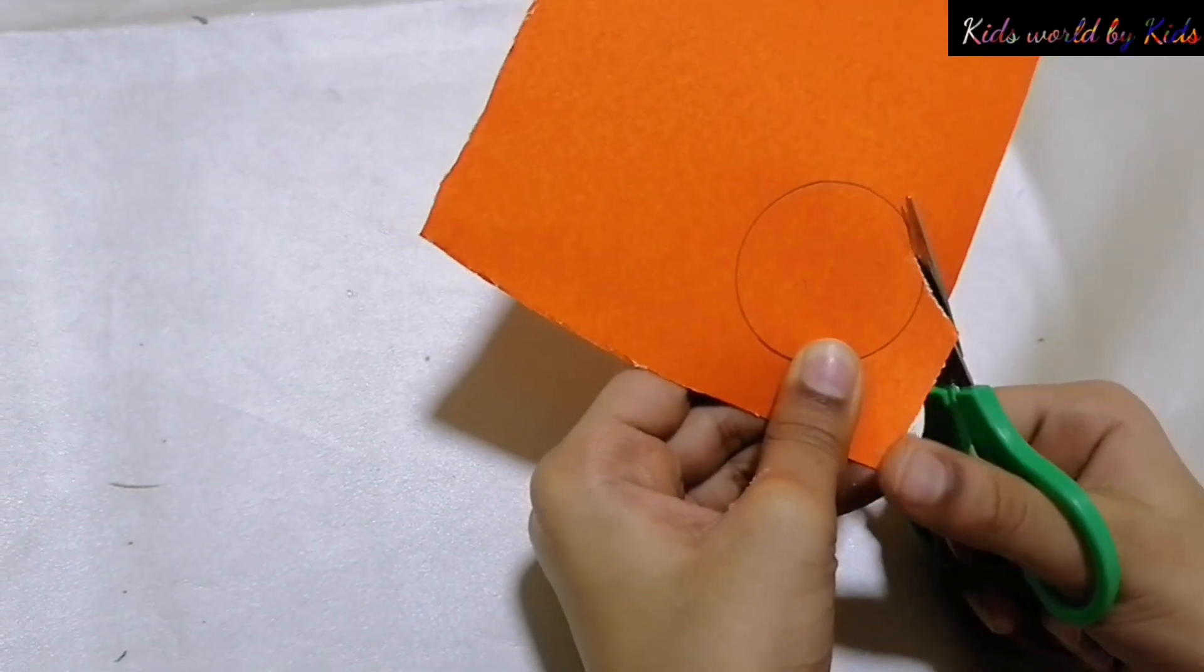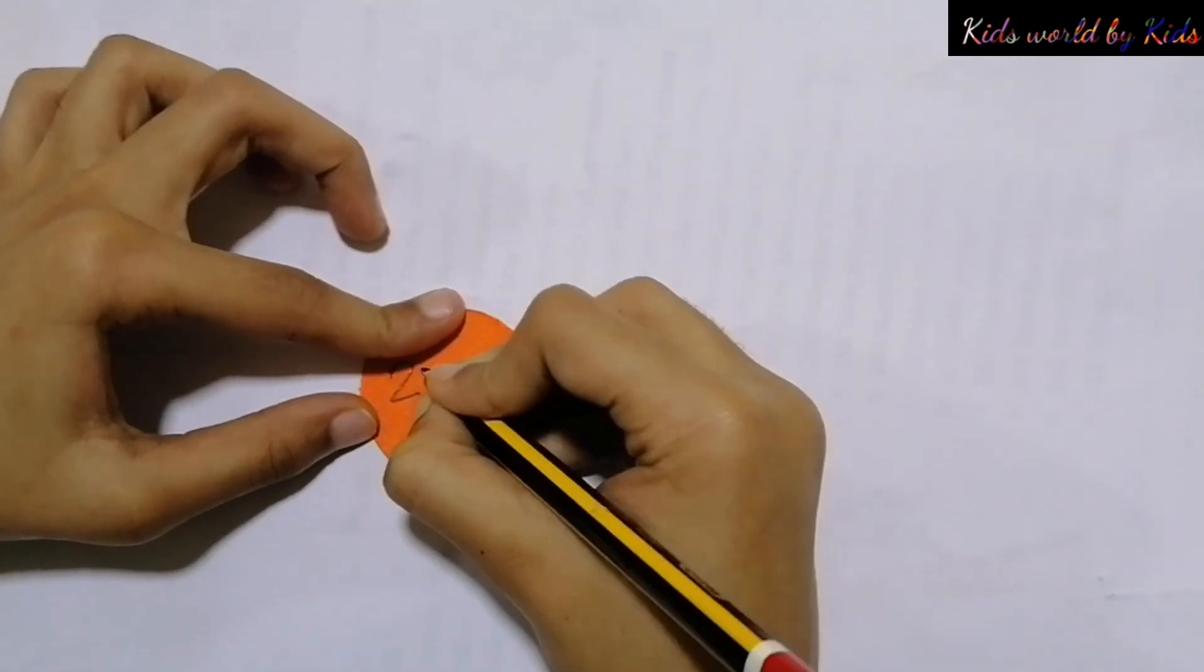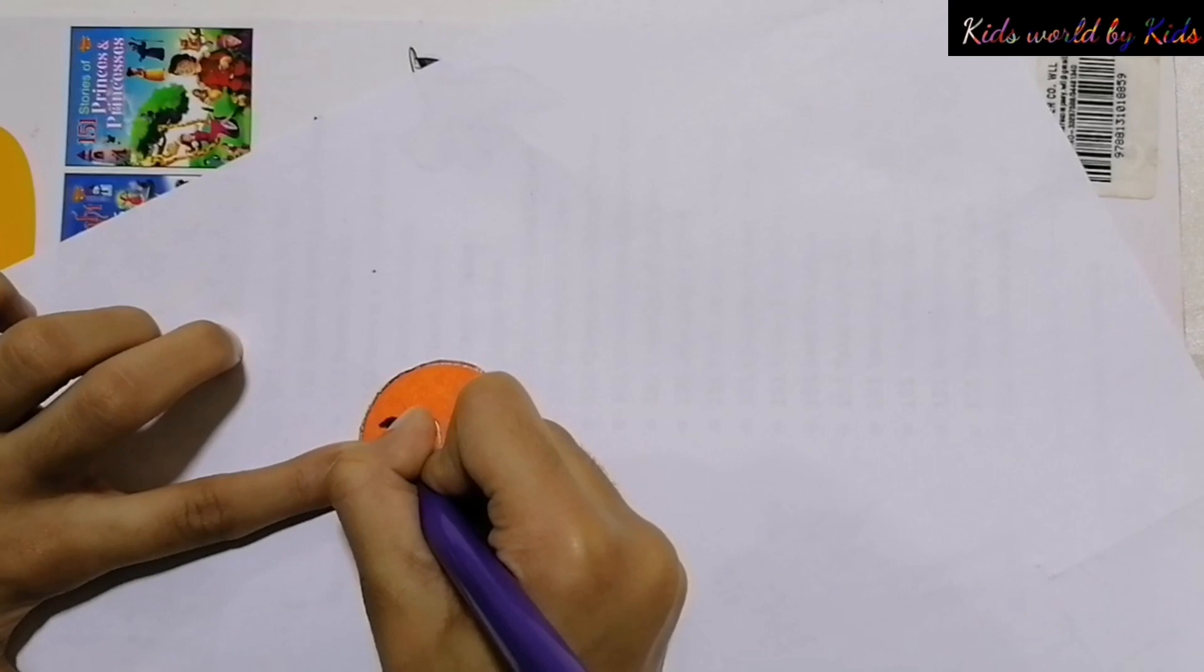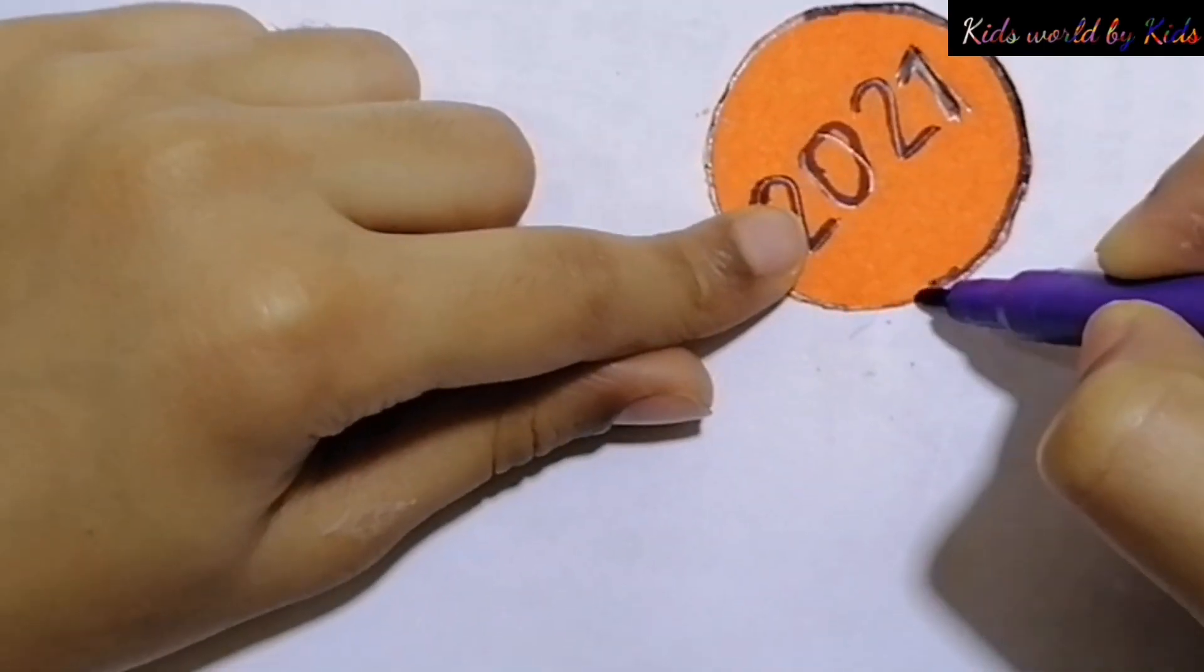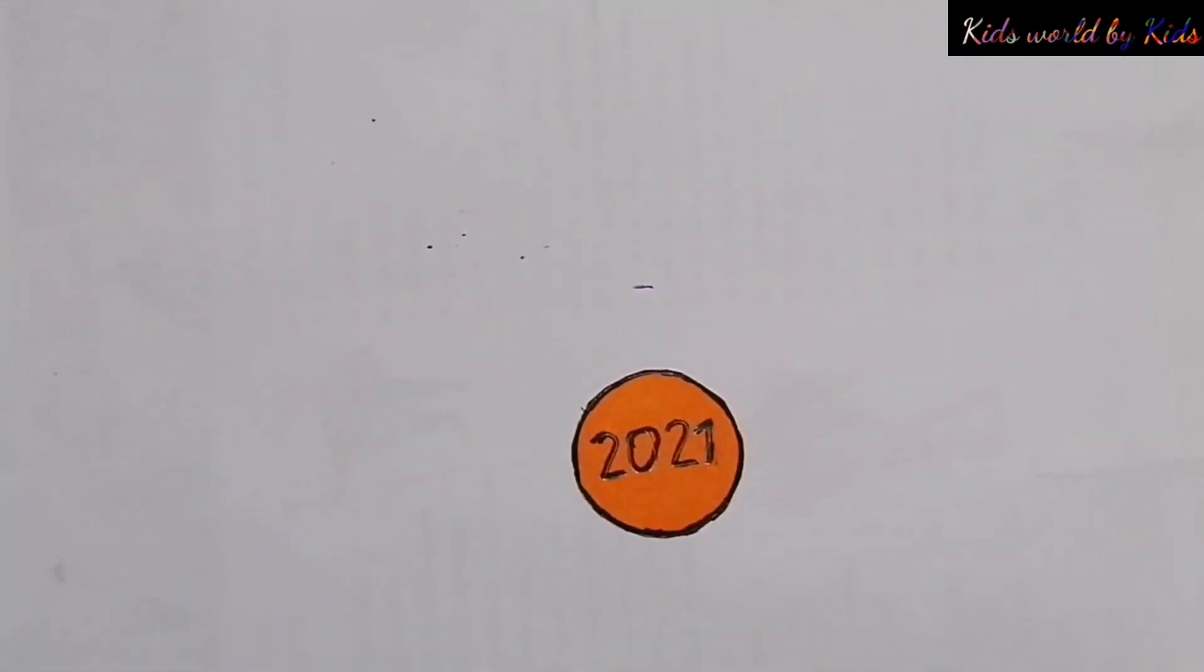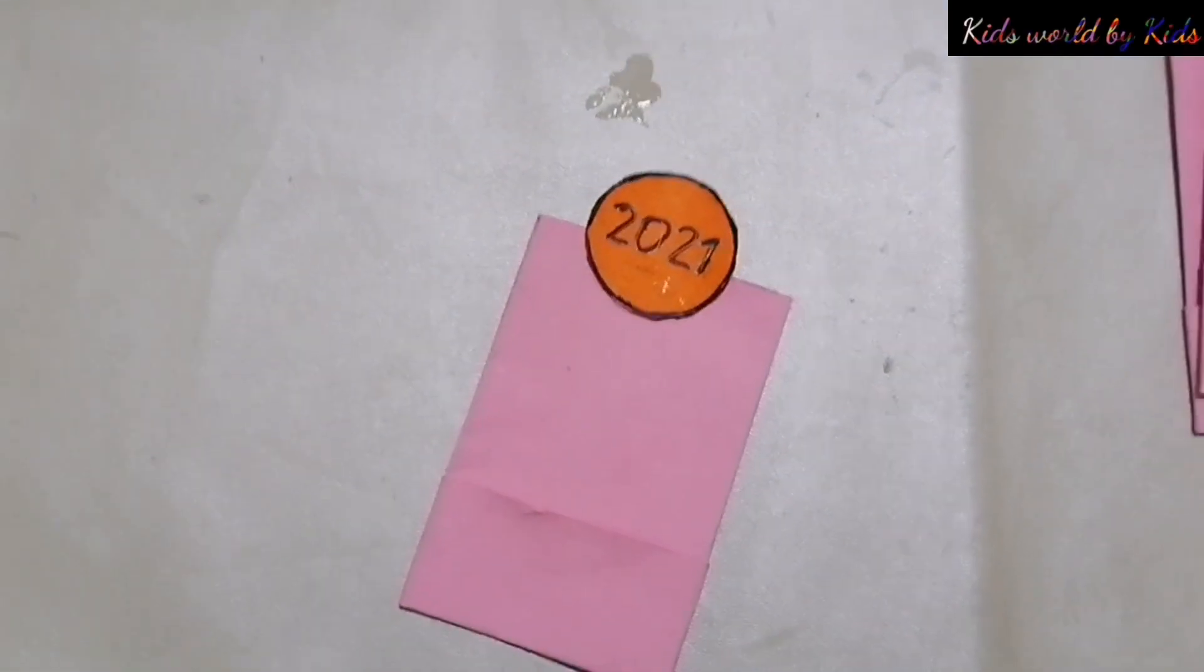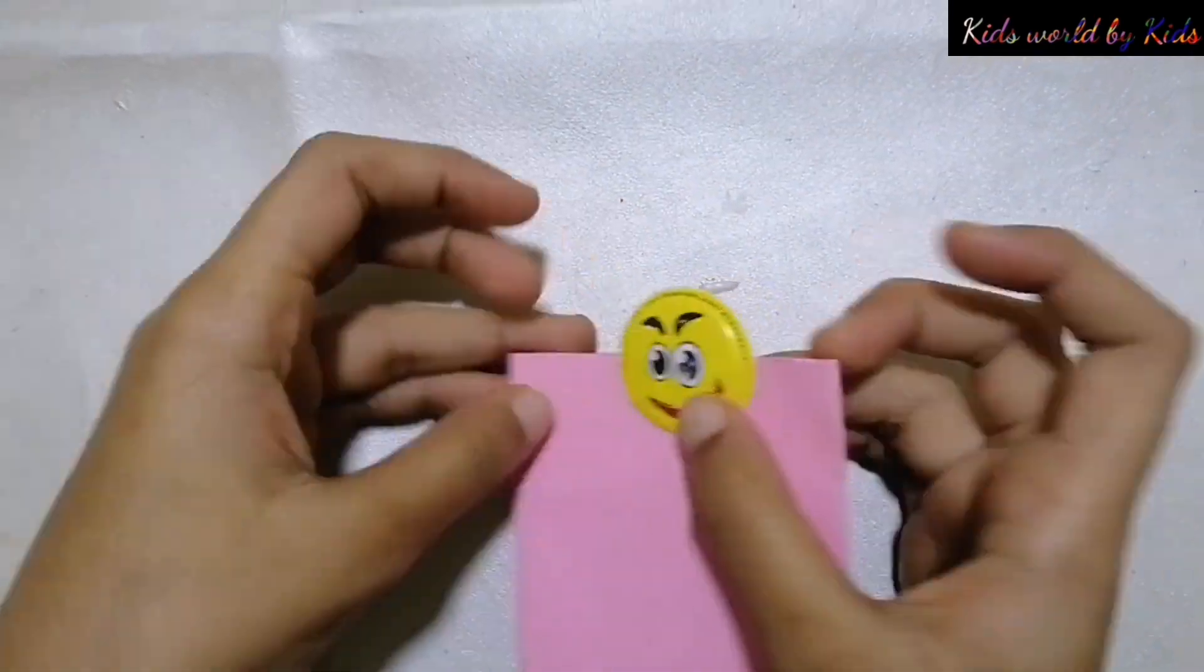Draw and cut the circle. Write 2-0-2-1. Stick on it. Stick smiley.